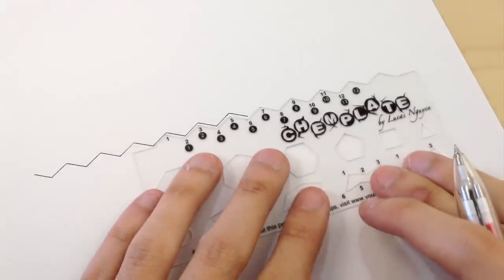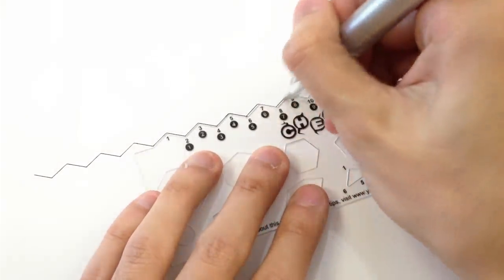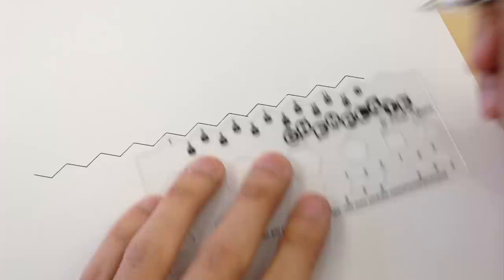But if your carbon chain requires more than 16 carbons, just slide your ChemPlate to the right and continue. It's that simple.